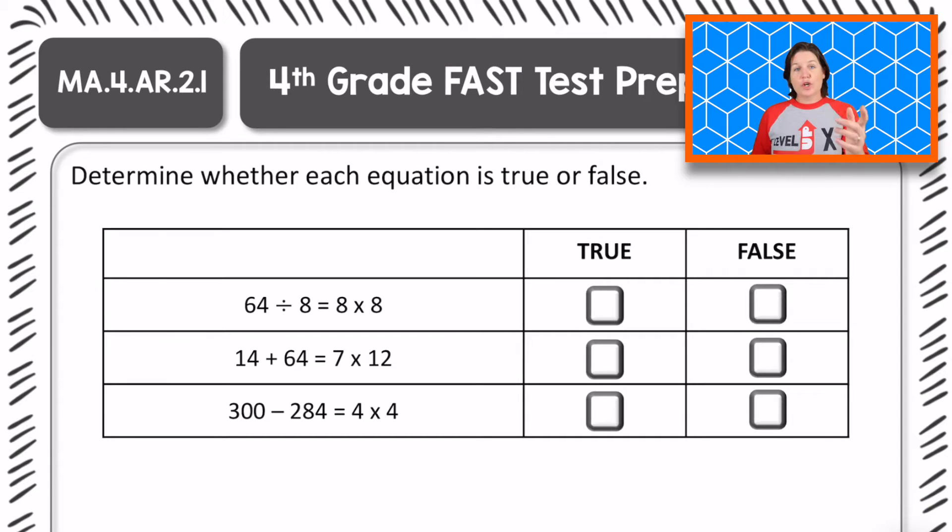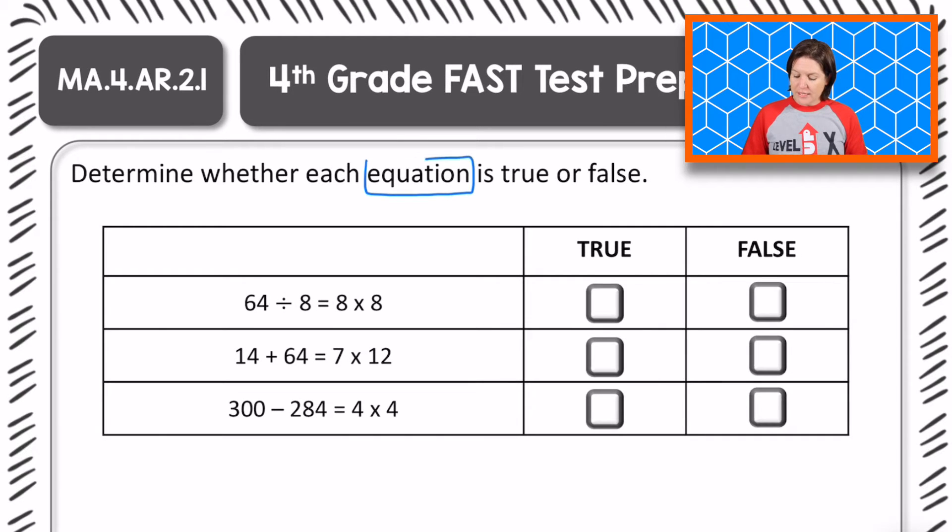All right, fourth grade, welcome back. So let's see how you did. This one says determine whether each equation, which means that we must have equal signs present, is true or false. And those columns are right there, true or false. So I see some equal signs right here. And what we need to do is determine does the left side of the equation match the right side of the equation? Are they equal? If they're equal, then they are true. If they're not equal, then they're false. So let's go ahead and solve each one.